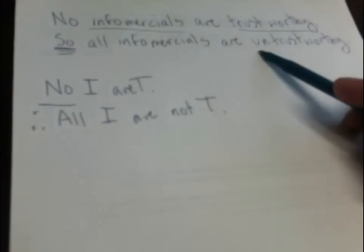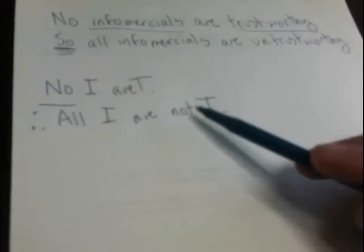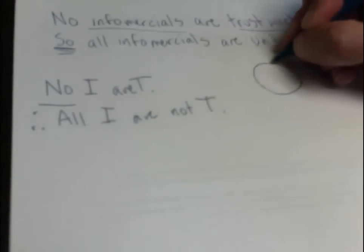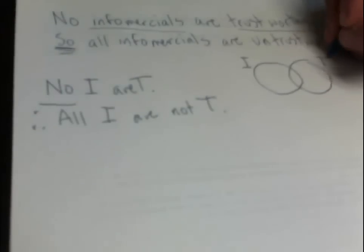We don't need a new letter to represent untrustworthy, since everything that's not trustworthy is untrustworthy. Now we draw our overlapping circles. One of the circles is I. Label the other circle T.